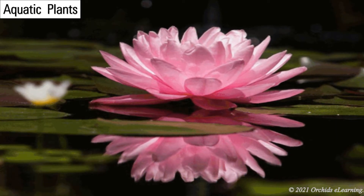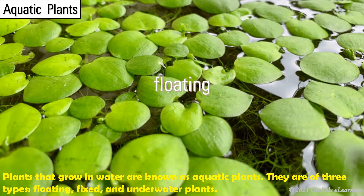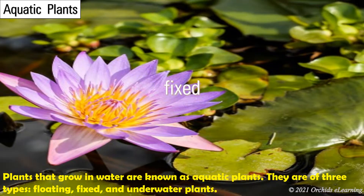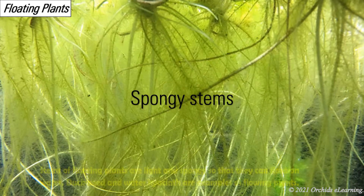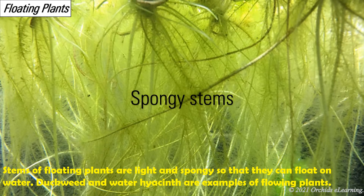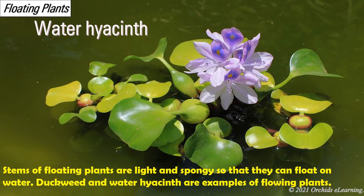Aquatic plants: plants that grow in water are known as aquatic plants. They are of three types: floating plants, fixed plants, and underwater plants. Stems of floating plants are light and spongy so that they can float on water. Duckweed and water hyacinth are examples of floating plants.